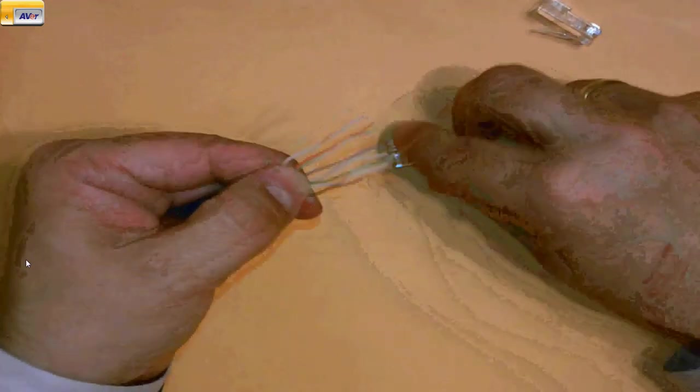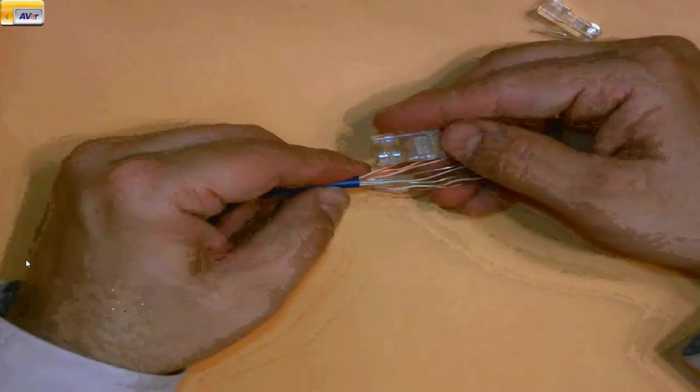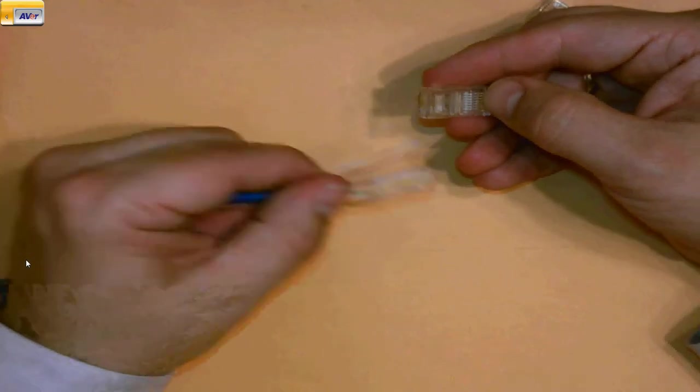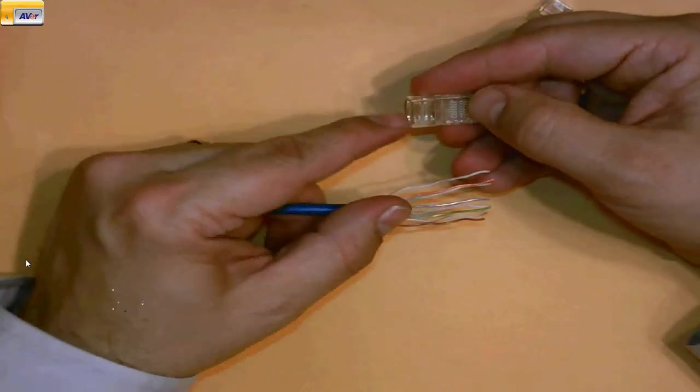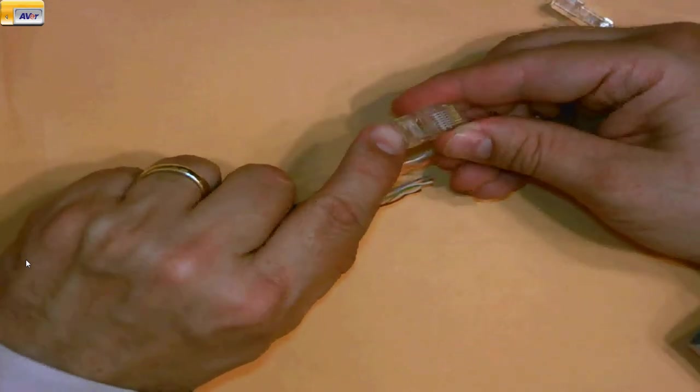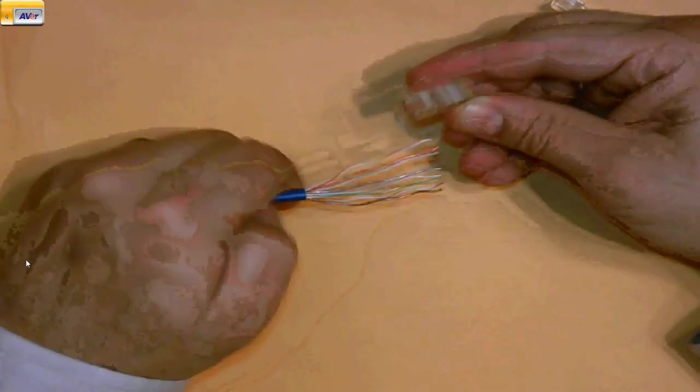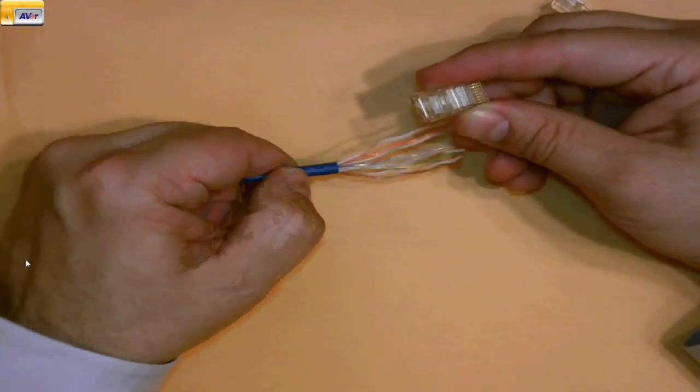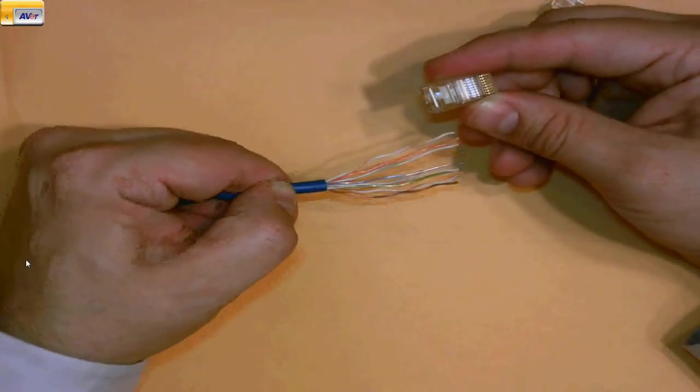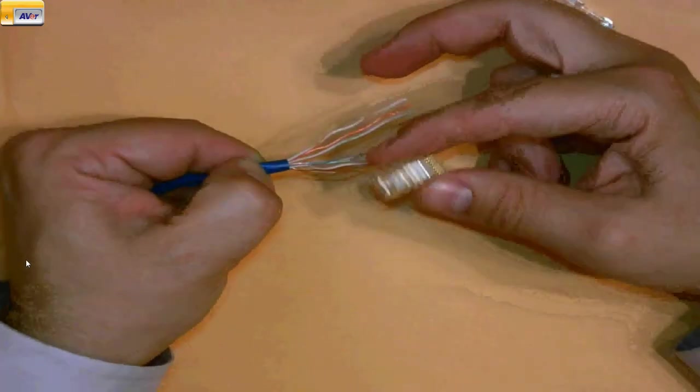They'll actually get pushed by the crimper through the insulation of my wire so that it makes a solid contact. One last thing though, these wires are really thin, they're really not very strong and so there's a little piece right here you can barely see it in the video. The piece will hit and you want to crimp it to where it touches this blue strong insulation.